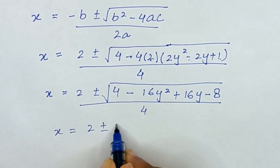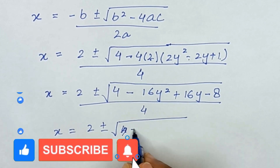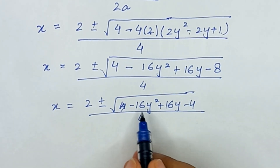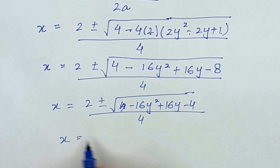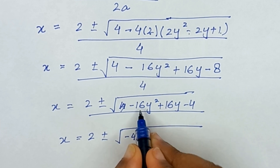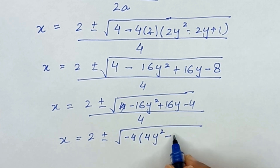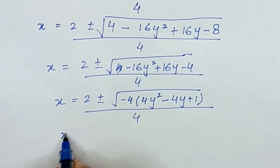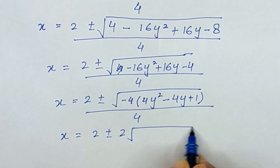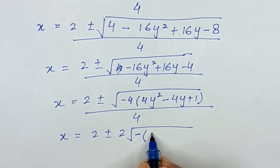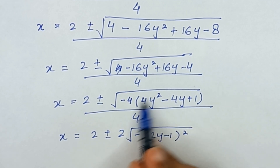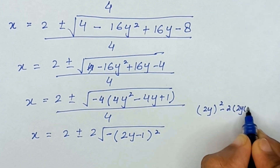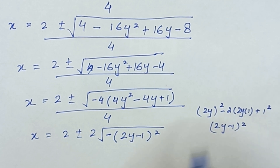So x = (2 ± √(-16y² + 16y - 4)) / 4. Taking -4 as common from inside the square root gives √(-4(4y² - 4y + 1)) / 4. Taking 4 out of the square root gives 2, so x = (2 ± 2√(-(2y - 1)²)) / 4, since 4y² - 4y + 1 = (2y - 1)².